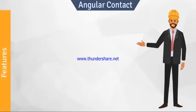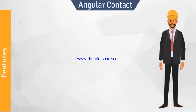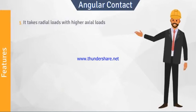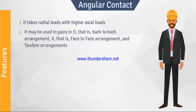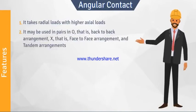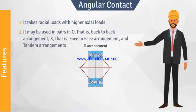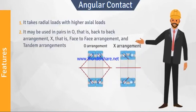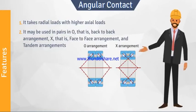Angular contact ball bearings have several features. First, they take radial loads with higher axial loads. Second, they may be used in pairs in O arrangement — that is, back-to-back arrangement — or X arrangement, that is, face-to-face arrangement, and tandem arrangements.